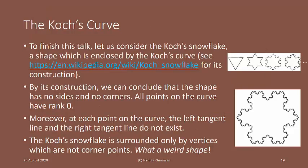To finish this talk, let us consider the Koch snowflake, a shape which is enclosed by the Koch curve. You can see the literature for its construction. By its construction, we can conclude that the shape has no sides and no corners. All points on the curve have rank 0.